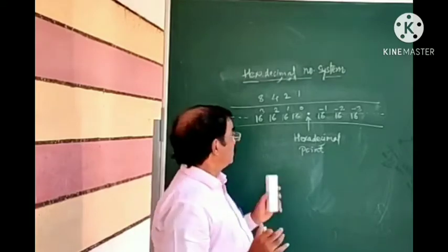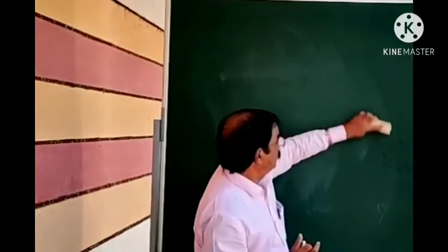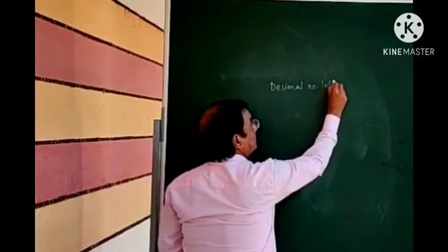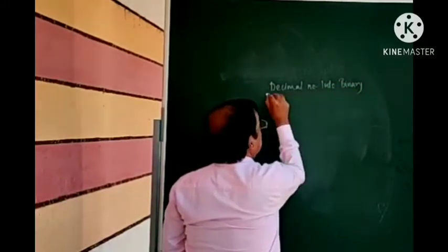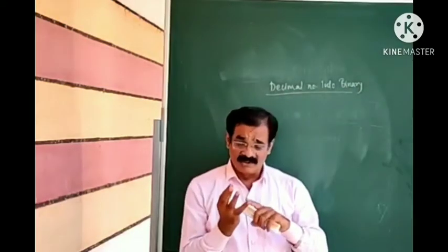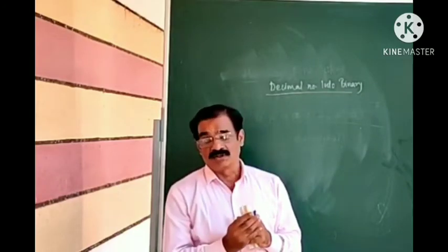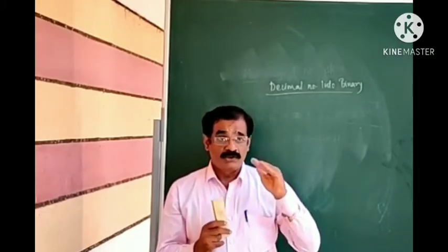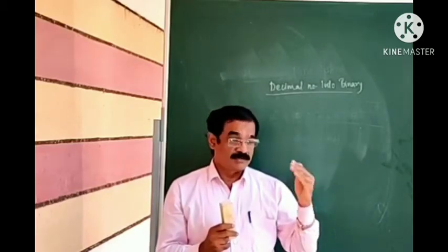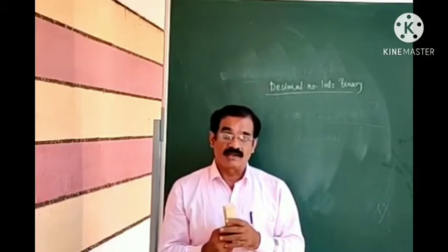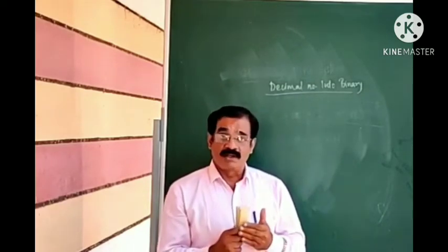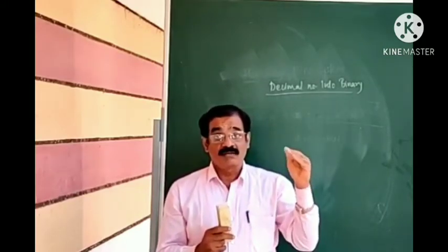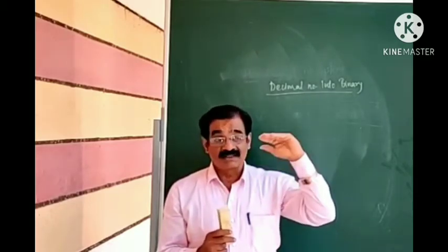First, we will see the conversion of decimal numbers into binary, octal, and hexadecimal. There is a common method: if you have a decimal number to convert into any other number system — binary, octal, or hexadecimal — the base of the new number system will successively divide the decimal number.